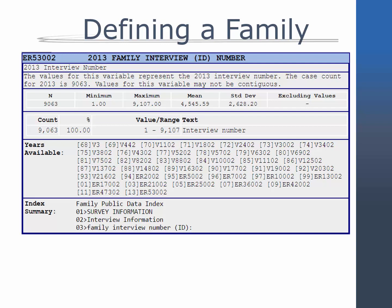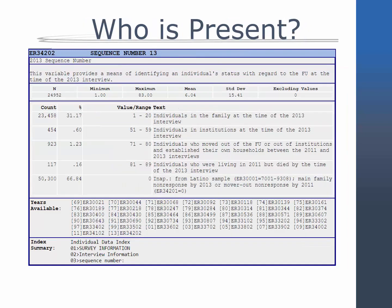The Family Interview ID variable is available for every wave of data collection and is assigned based on the order in which the interviews are received. The first interview from the field is numbered 1, the second 2, and so on. This means it's very unlikely that a family will get the same Family Interview ID number in multiple waves, so the Family Interview ID number cannot be used to follow family units over time.